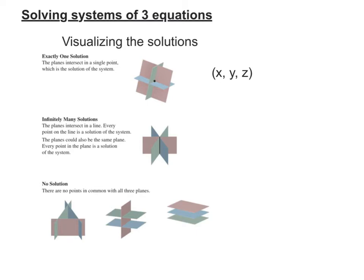Just like our systems of two equations, we could have one solution, we could have infinitely many solutions, or we could have no solution. When we have one solution, our answer represents a point where the three planes intersect, and our answer is written (x, y, z).